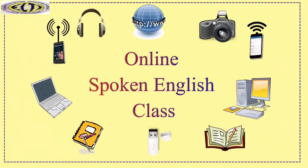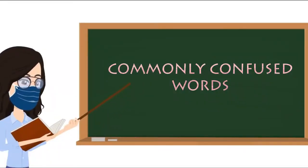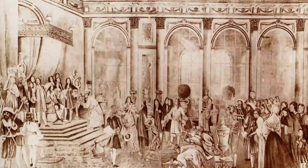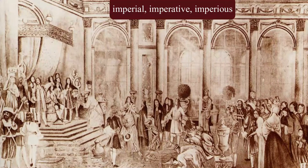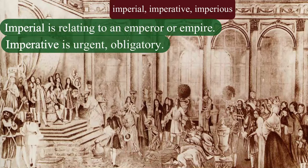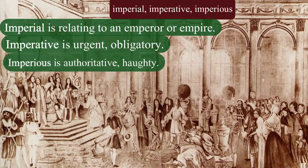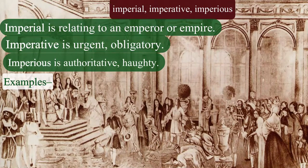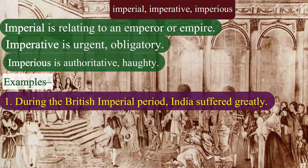Hello everyone, welcome back to the online spoken English class. In this module we shall know about some more commonly confused words. Let us look at these: imperial, imperative, and imperious. Imperial is relating to an emperor or empire. Imperative is urgent or obligatory. And imperious is authoritative or haughty.